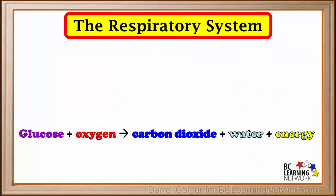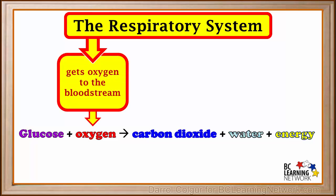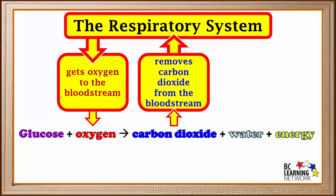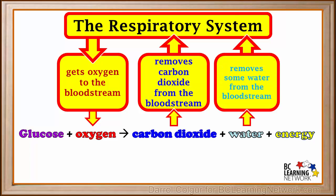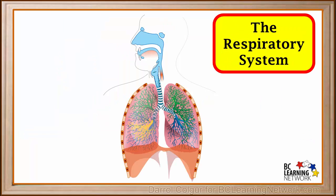The three main functions of our respiratory system are to get oxygen to the bloodstream, which carries it to all the body cells, remove carbon dioxide from the bloodstream and our body, and remove some of the excess water from the bloodstream and our body. Now we'll show you the main parts of the respiratory system and briefly explain what each of them does.